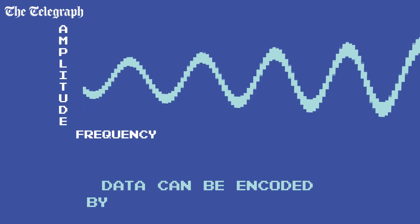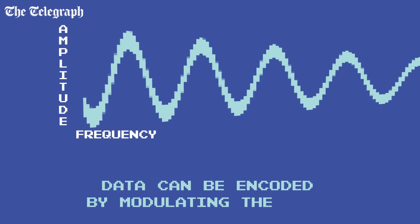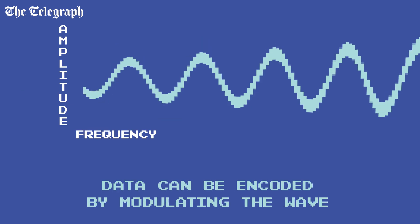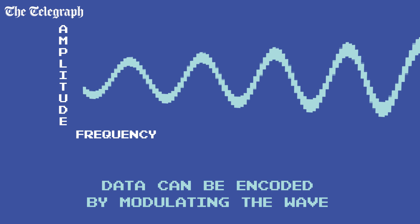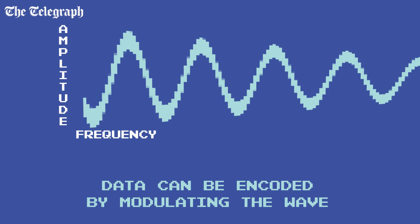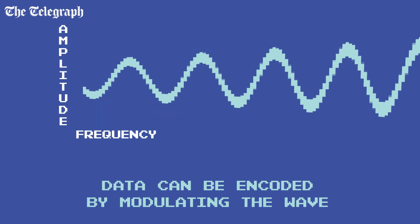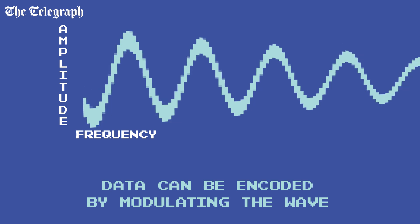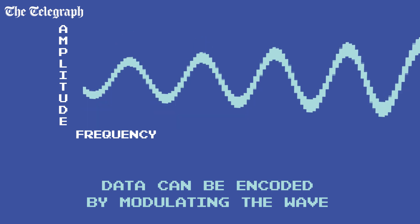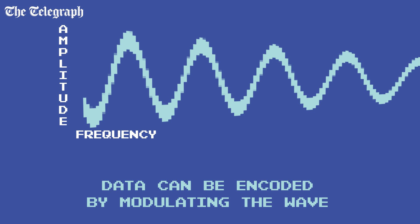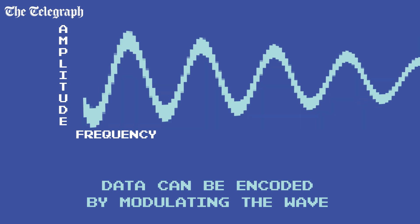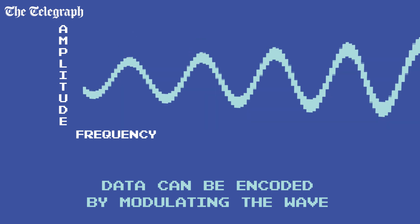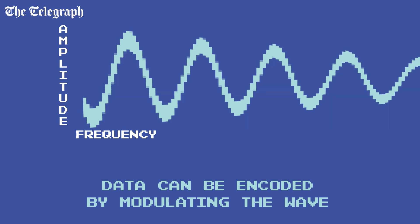By varying the signal which is sent, it becomes possible for those waves to contain information which can be decoded at the other end. AM radio, for example, does this in a very simple way by modulating the amplitude of the wave dependent on the information being transmitted.